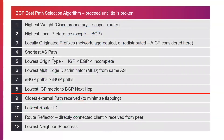If that doesn't break the tie, the next thing we look at is the origin — where the route came from. The first and most preferred is IGP, which means we learned it from the network command as a static route in BGP. The next highest preference would be EGP, the predecessor to BGP, which is really not in the network anymore. The last is incomplete, which covers redistributed routes or other learned routes. Basically, we prefer IGP routes over incomplete routes.